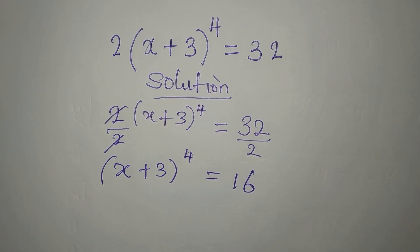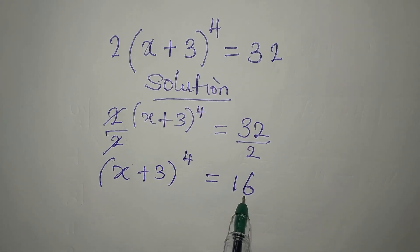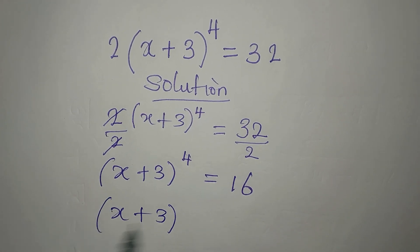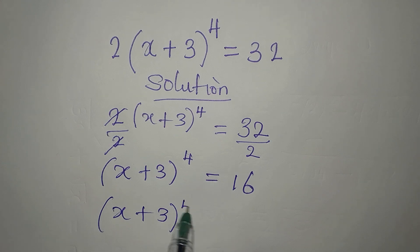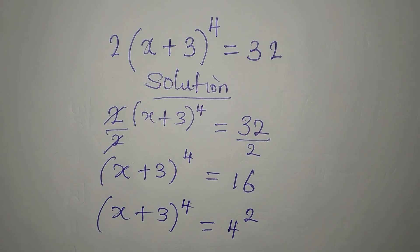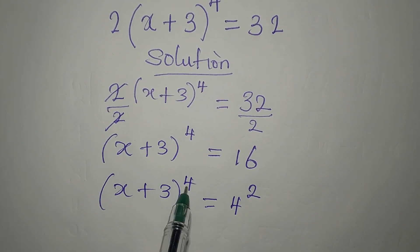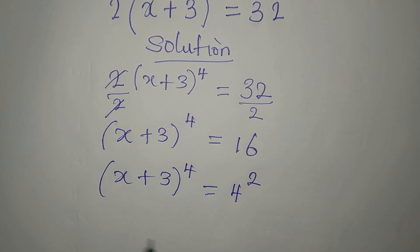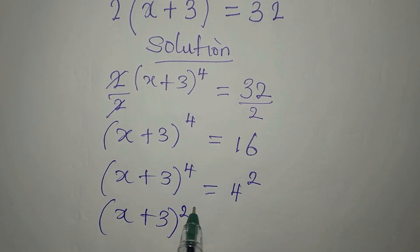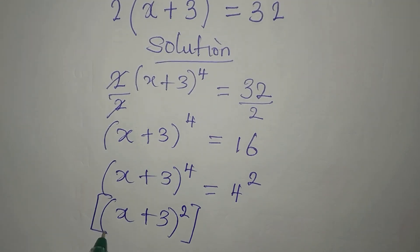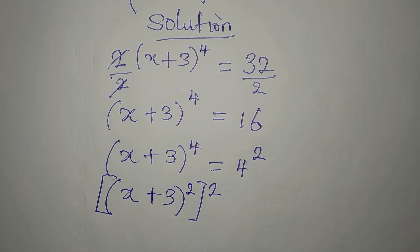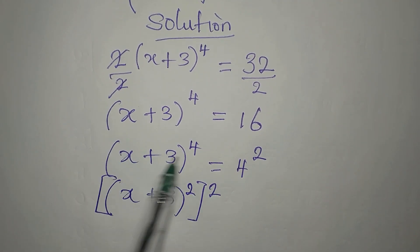The next thing we are going to do is break this 16 so that we have (x + 3) to the power of four equals 4 to the power of two. Now I want to have a power of two on the left side as well, so I'll write (x + 3) to the power of two, then everything to the power of two. Remember, if I open the brackets I multiply the powers and it gives four.